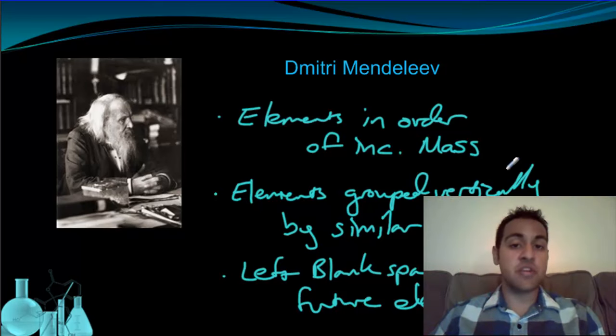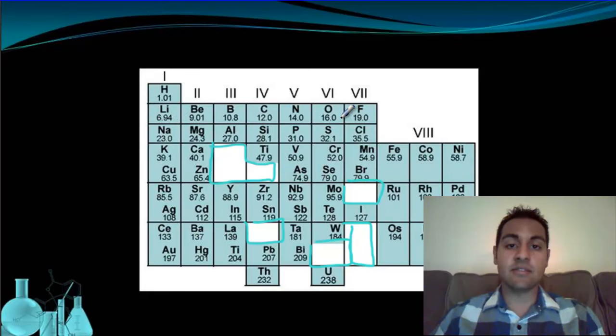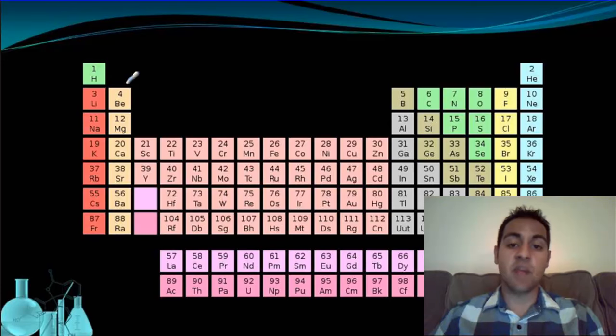Now one major change from this that our modern periodic table has is that it's not organized by increasing mass. It is in fact organized by increasing atomic number.